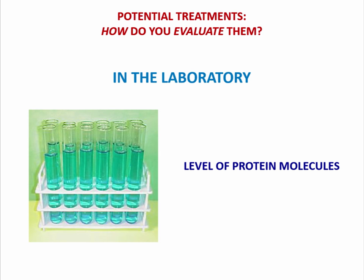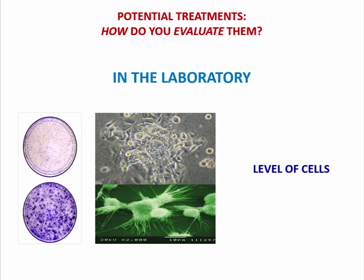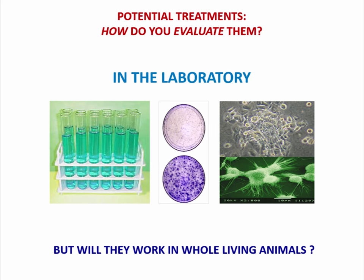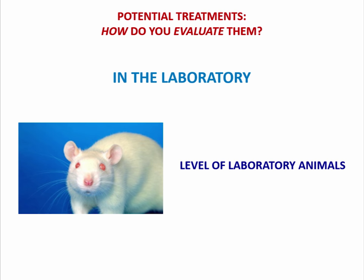How do you evaluate a new treatment? First, at the level of protein molecules — you look at the abnormal form of prion protein, put the treatment in a test tube, and see what happens. Then you go to cells grown in dishes, infect them, and see how the treatment works in a functioning living cell. Then you turn to animal experiments — usually rodents. You take a set of rodents and inoculate them with infection, and take another set who are also given a treatment, then follow up over time.